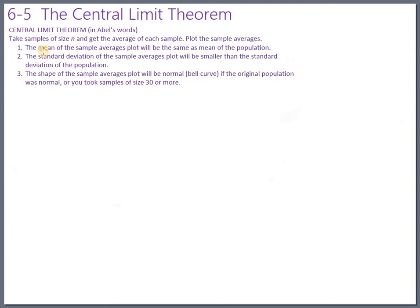First, the mean of the sample averages will be the same as the mean of the population — the mean stays the same as you transition from an individual to a group. Second, the standard deviation gets smaller, and we even have a formula: the standard deviation of the sample means (the x-bars) will be the original standard deviation divided by the square root of the sample size, whether that's 5, 30, or 100. Third, the shape of those sample averages will be normal, bell-curved, if the original population is normal or if you take samples of size 30 or bigger.